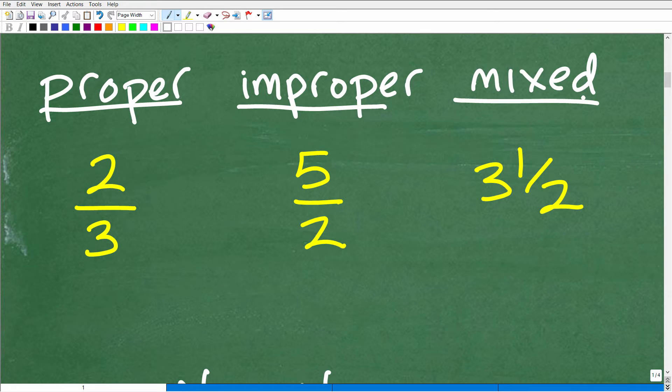A proper fraction is where the numerator, that top number, is smaller than the denominator, something like two-thirds. Now, an improper fraction is the reverse, where the numerator is larger than the denominator, something like five-halves. This would be classified as an improper fraction.